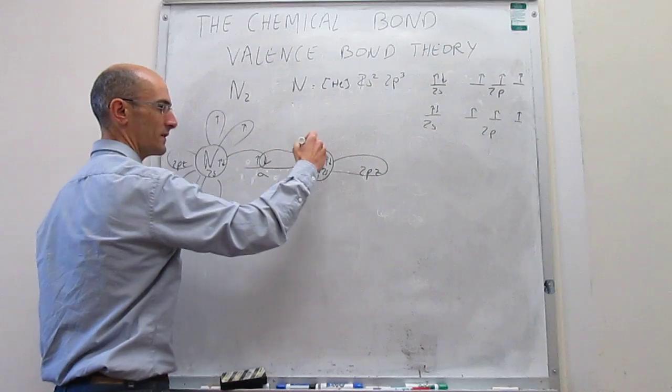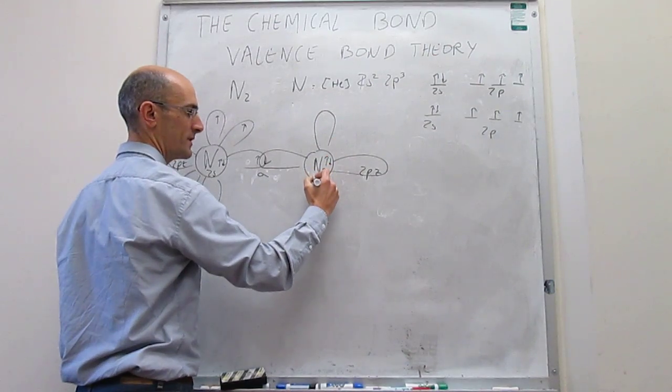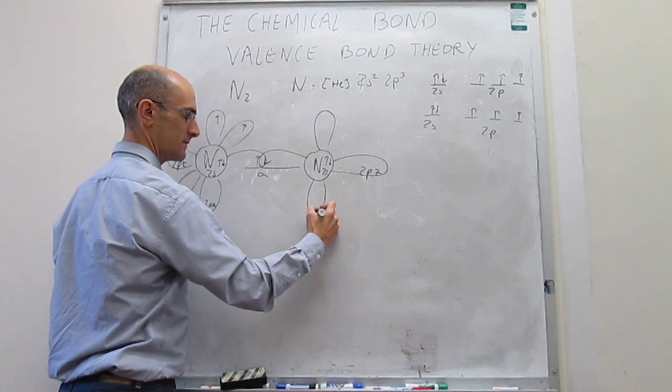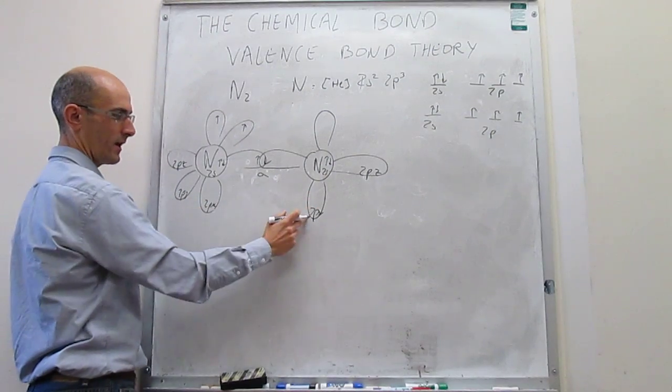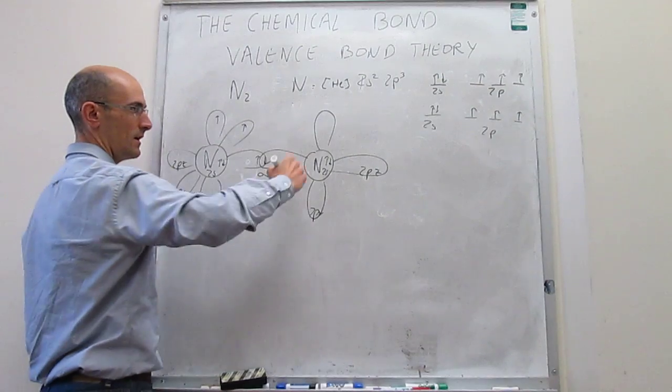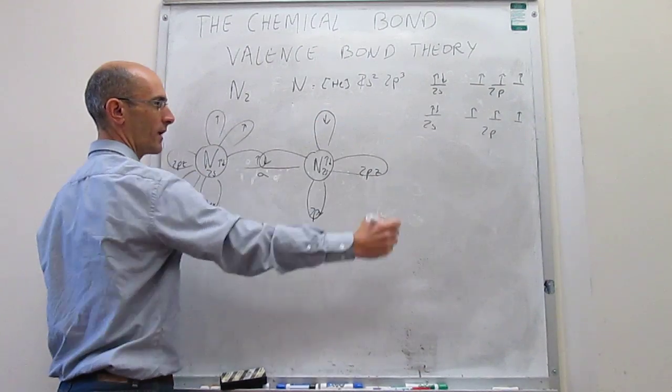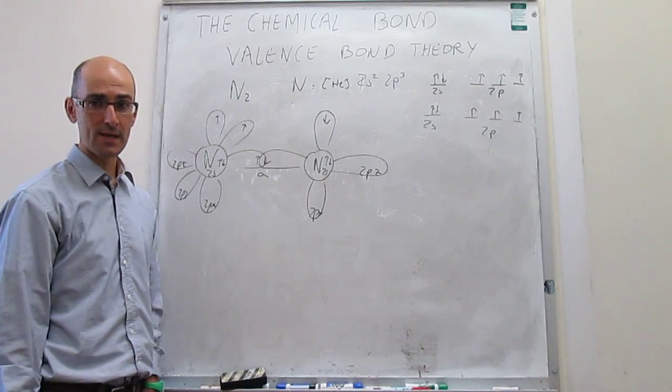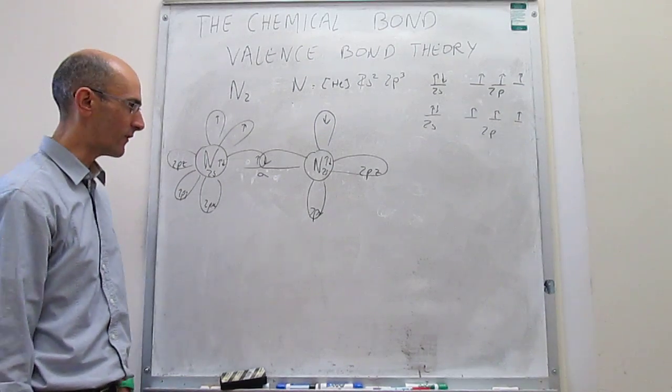But now, we're not done with this because we also have other types of orbitals that can form bonds. Here we have the 2px. Notice that we have x here, x there is the same direction of space, up and down, and you also have one electron that I'm going to choose to put with spin down, to see if we can form an overlap here.